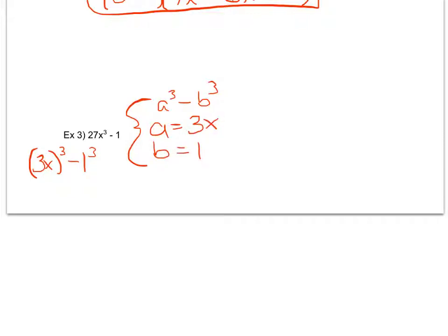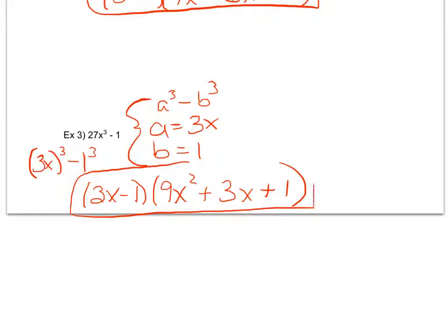From here, I follow my formula, which tells me to do a minus b times a squared. I square both the 3 and the x, plus a times b, 3x times 1, plus b squared. Again, if I were to check my quadratic, I know there isn't anything that multiplies to be 9 and adds to be 3, so that is my final factored product.